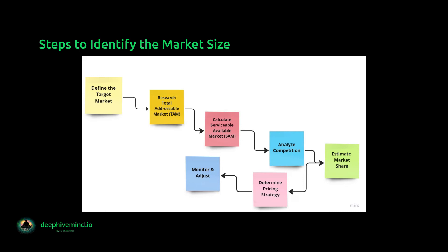Seventh, monitor and adjust — continuously monitor the market to assess changes in demand, competition, and pricing, and adjust the marketing strategy as necessary to stay competitive and meet revenue goals. By following these steps, businesses can estimate the market size of their digital product, identify revenue opportunities, and develop a marketing strategy that is tailored to the specific needs and preferences of the target audience.